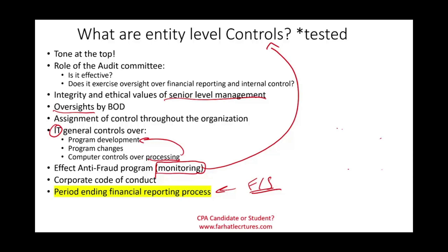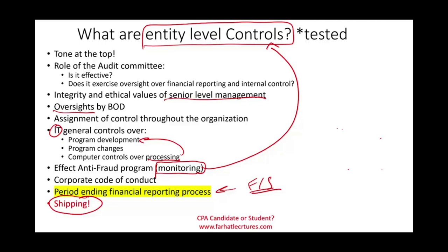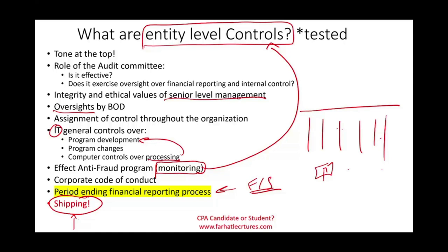All those examples are entity-level controls — they deal with monitoring, the control environment, and they affect the entire organization. It doesn't mean other controls are unimportant, but if you have a weak internal control in the shipping department, for example, it only affects shipping and sales — perhaps a completeness issue with recording sales. That's a problem, but it's not entity-level. The distinction is: entity-level controls affect the entire organization, whereas departmental controls affect only part of it.